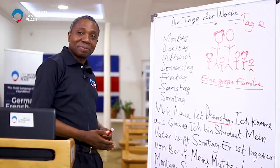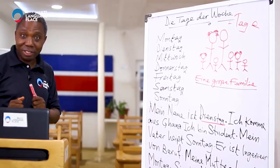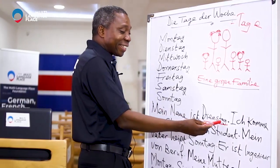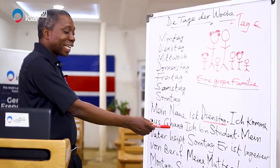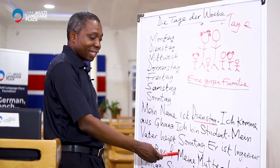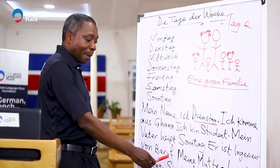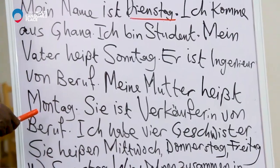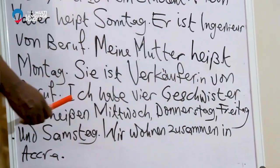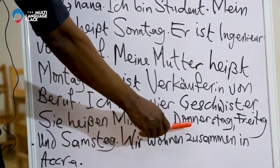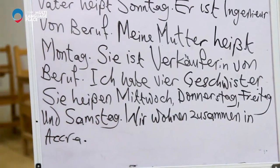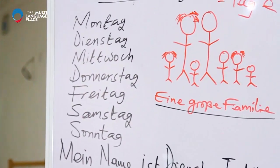We want to go through this wonderful story of this family. I'm going to read it first and then we'll read it together. My name is Dienstag. I'm coming from Ghana. I am a student. My father is Sonntag — he is an engineer by profession. My mother is Montag — she is a shopkeeper. Ich habe vier Geschwister. Sie heißen Mittwoch, Donnerstag, Freitag und Samstag. Wir wohnen zusammen in Accra.